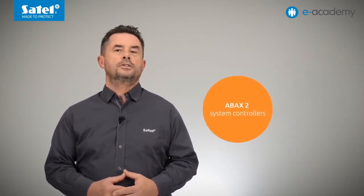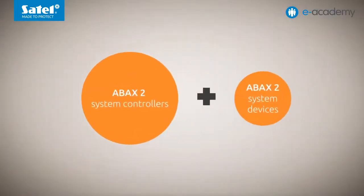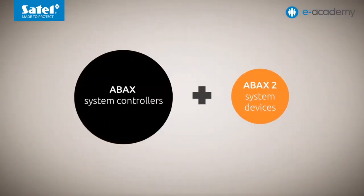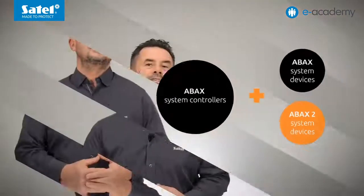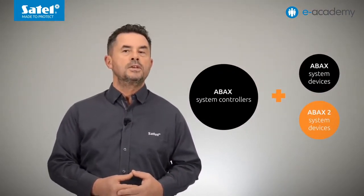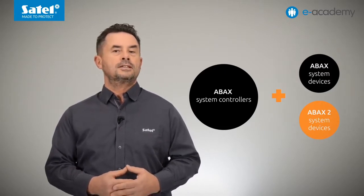A mention should be made of the compatibility of ABAX2 and ABAX wireless system devices. Only devices of the ABAX2 system can be enrolled into the ABAX2 controllers, that is, ACU220 and ACU280. As for the ABAX system controllers, ACU120 and ACU270, they can work both with the ABAX as well as the ABAX2 system devices. However, in this case the functionality of the ABAX2 devices will be limited — for example, radio transmission will take place only on one channel of the 868 MHz frequency band, and the communication range will also be much shorter. The ARU200 radio signal repeater cannot work with the controllers of the first version of the wireless system.